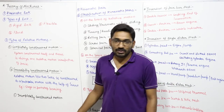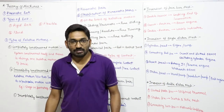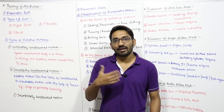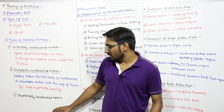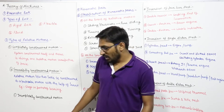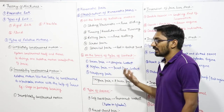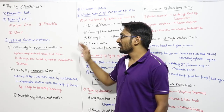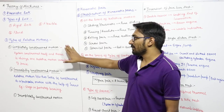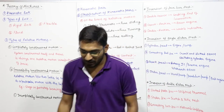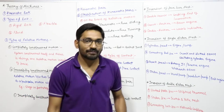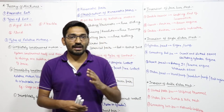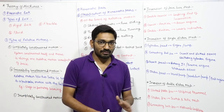Next is incompletely constrained motion, meaning the output will vary — if you change the force, you will get different relative motions. For any kinematic pair, chain, mechanism, or machine, we only want either completely constrained or successfully constrained motion. We do not want incompletely constrained motion because in any mechanism we only want a particular type of output.